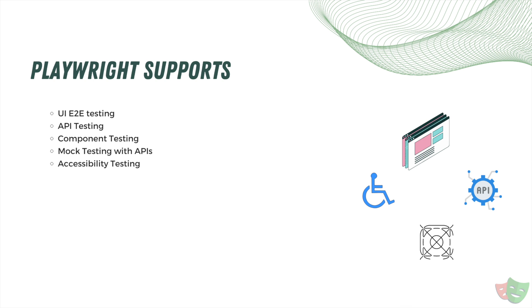Playwright supports a wide range of testing types. Beyond end-to-end UI testing, it also supports accessibility testing, component testing (even though experimental, it works pretty well), and API testing — all out of the box. Selenium does not support component testing at all, and while you can do API testing with Selenium it requires third-party libraries. In Playwright, everything is supported natively.